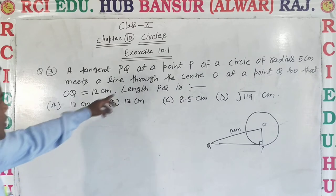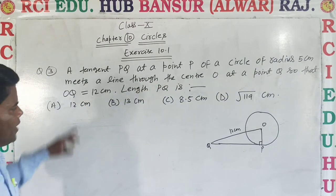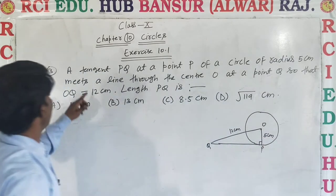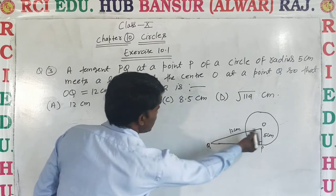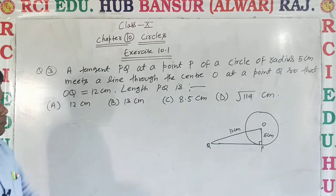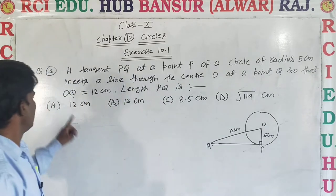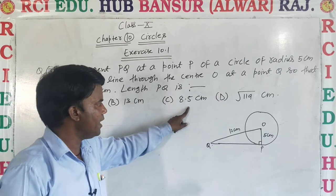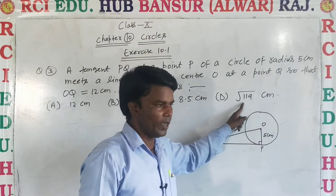A tangent PQ at a point P of a circle of radius 5 cm meets a line through the center O at Q, so that OQ equals 12 cm. Find the length PQ. Option A: 12 cm, B: 13 cm, C: 8.5 cm, D: √119 cm.